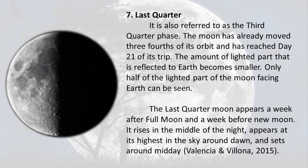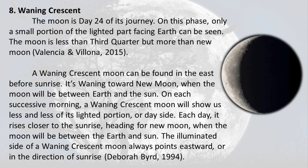Phase 7 — Last Quarter (also referred to as the Third Quarter): The moon has already moved three-fourths of its orbit and has reached day 21 of its trip. The amount of lighted part reflected to Earth becomes smaller; only half of the lighted part of the moon facing Earth can be seen. The last quarter moon appears a week after full moon and a week before new moon. It rises in the middle of the night, appears at its highest around dawn, and sets around midday.